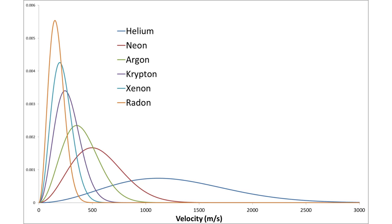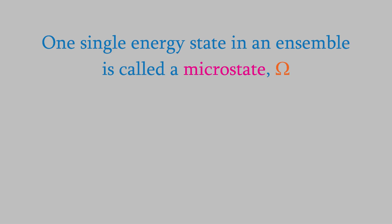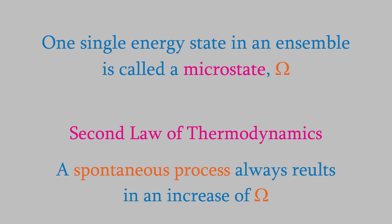Suppose, instead of the whole range of states the system can have, we only look at one particular state. We refer to that as a microstate and use the symbol capital Omega for the total number of microstates in the ensemble. You might recall from Physical Chemistry 1 that the second law of thermodynamics states that a spontaneous process always results in an increase in the value of Omega, the number of possible microstates.